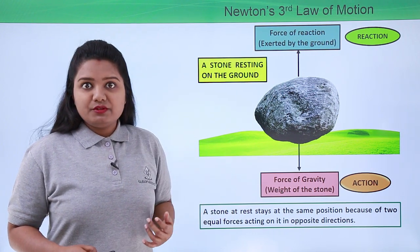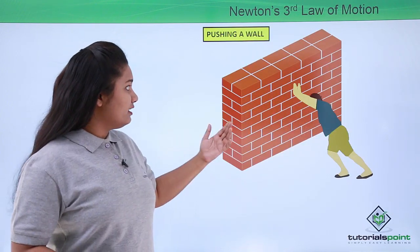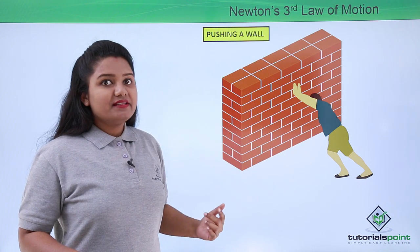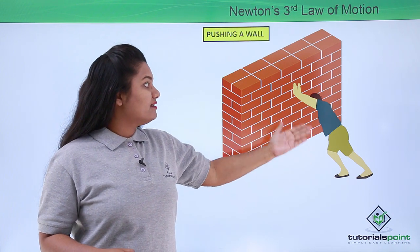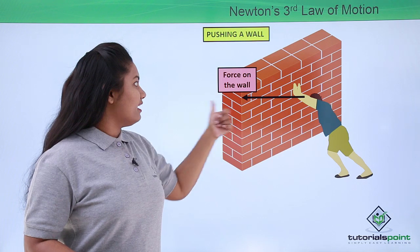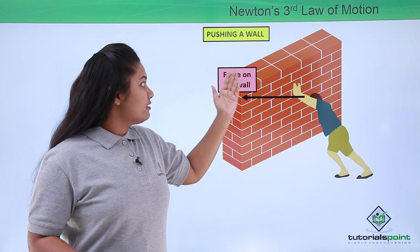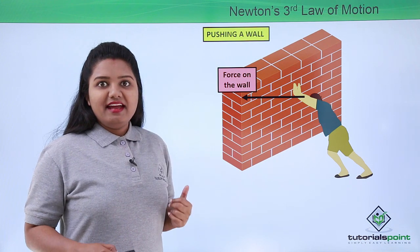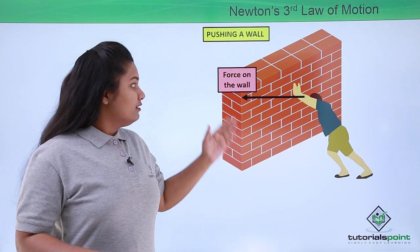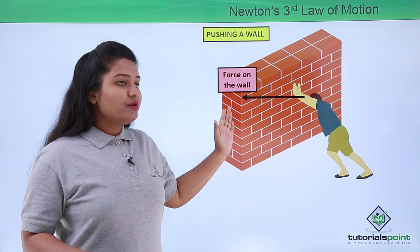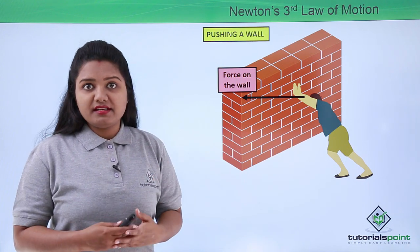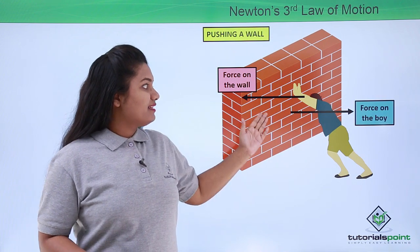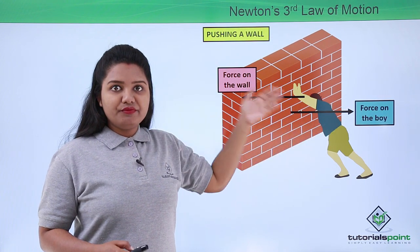Now let us look at another situation. Here a boy is pushing a wall. While pushing, he exerts a force onto the wall in this direction. The force on the wall is directed towards the wall, and in return the wall exerts a force which is equal in magnitude and opposite in direction back onto the boy, in the direction away from the wall.